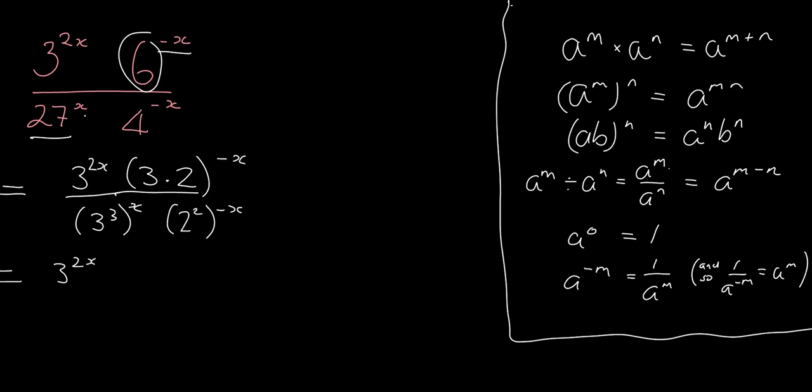Here, I'm going to apply for this bit here, I'm going to apply this rule. This negative x, the power applies to both the things inside the bracket. So it's 3 to the negative x, 2 to the negative x.